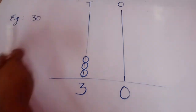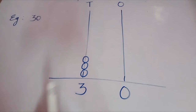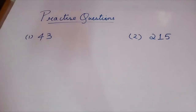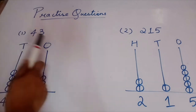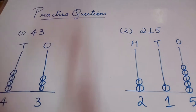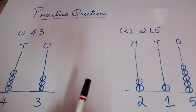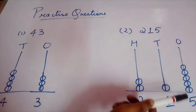Now another example: 30. This is a 2-digit number, so draw the Abacus with tens and ones spikes. Under tens write 3, under ones write 0. Draw 3 beads for the tens and no beads for the ones. Now your practice questions: First, 43 — a 2-digit number, so 2 spikes with tens and ones. Draw 4 beads for tens and 3 beads for ones. Second, 215 — a 3-digit number with 3 spikes. Draw 2 beads for hundreds, 1 bead for tens, and 5 beads for ones.